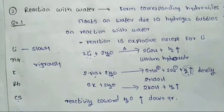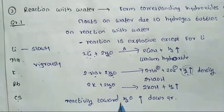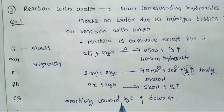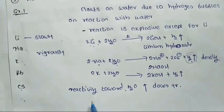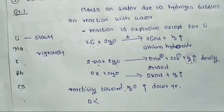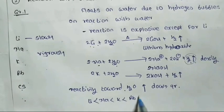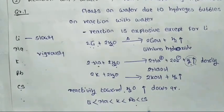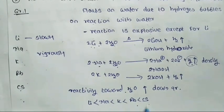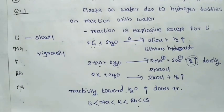In Group 1, reactivity toward water increases down the group. The order is: lithium reacts slowly, then sodium, potassium, rubidium, and cesium — with cesium being the most highly reactive with water.